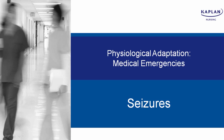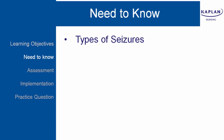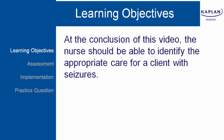I'm going to be reviewing care of the clients with seizures. What you need to know in order to give care to clients with seizures are the types of seizures. There are many types of seizures. One example is a myoclonic seizure: onset happens in childhood, with brief muscular contraction involving one or more limbs or trunk. You need to review the types of seizures and medications used to treat them. At the conclusion of this video, the nurse should be able to identify the appropriate care for a client with seizures.